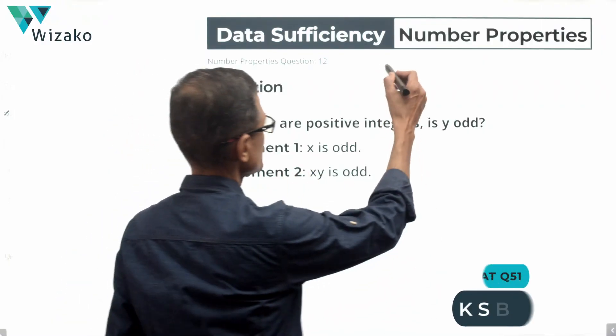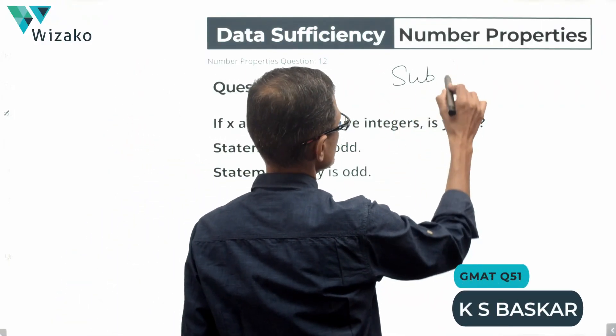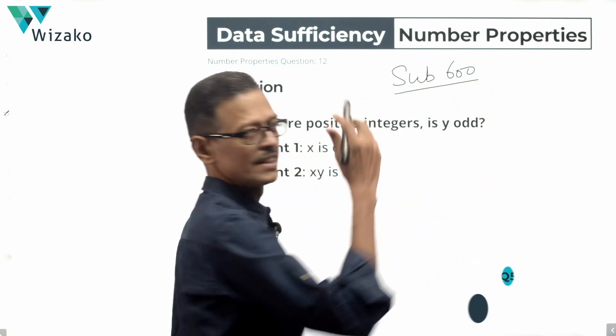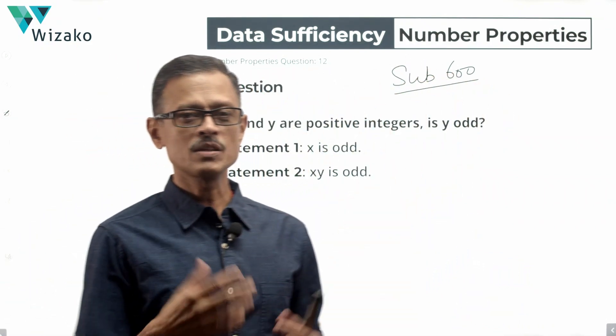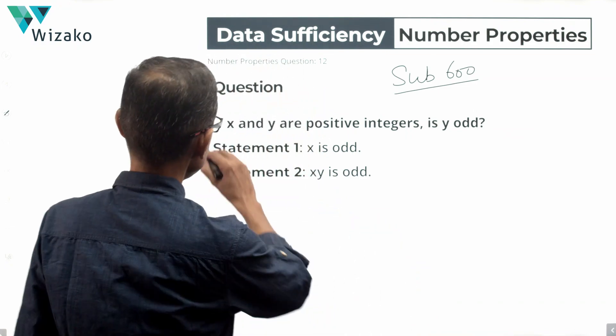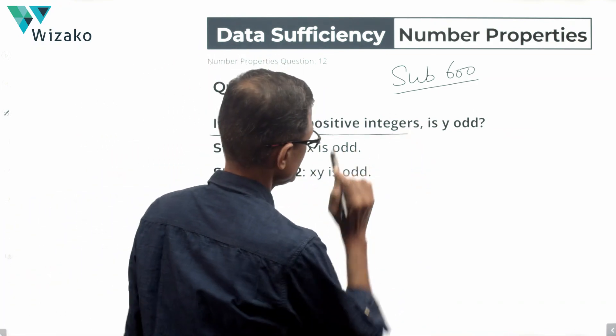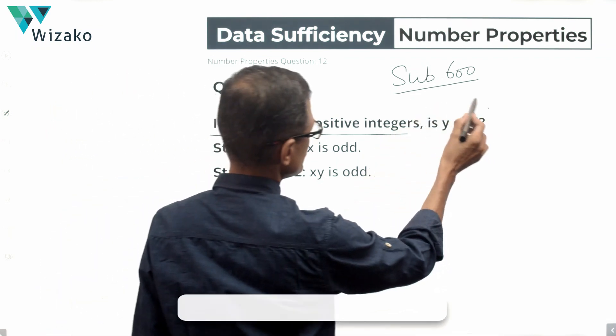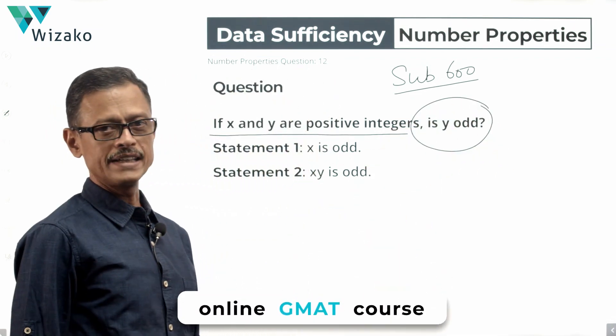This is an easy question. I'll classify this as a sub-600 level GMAT data sufficiency question in number properties. The concept tested is properties of odd and even integers. What do we know? x and y are positive integers. If x and y are positive integers, we need to determine whether y is an odd integer.